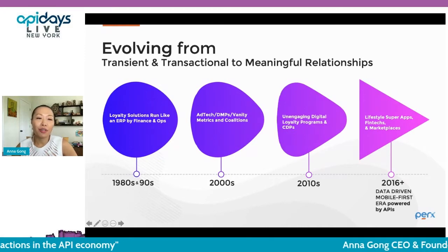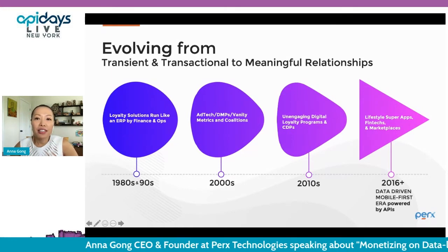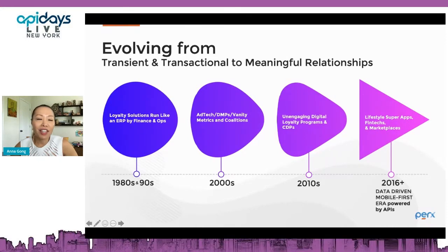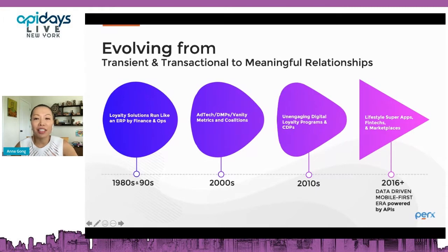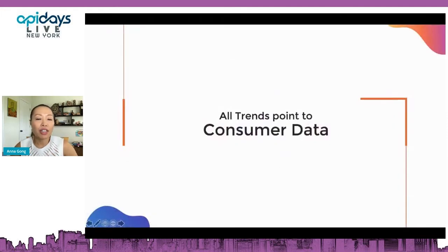What we're seeing in Asia Pacific — having come from San Francisco and moved to Asia — is the rise of lifestyle super apps. Many Americans haven't heard of super apps: lifestyle apps coming from telcos, ride-hailing, banking fintechs, and marketplaces evolving outside their core. Even AirAsia — the Southwest equivalent of Asia — is becoming a super app moving into food delivery and fintech.